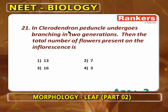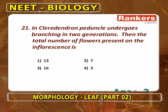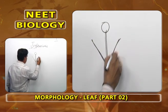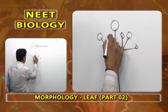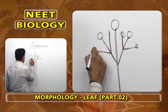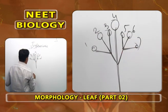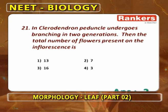In Clerodendron, peduncle undergoes branching in two generations of dichasial cyme. The peduncle grows definitely and ends as a flower. First generation produces two flowers; second generation produces two more flowers each. Counting all: one central + two first generation + four second generation = seven total flowers present in the Clerodendron dichasial cyme after two generations of branching.